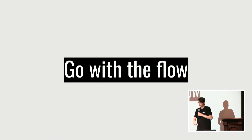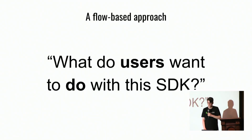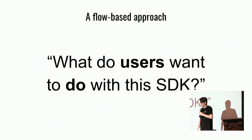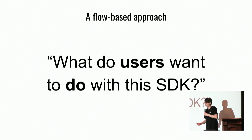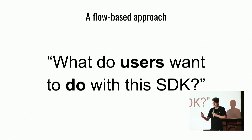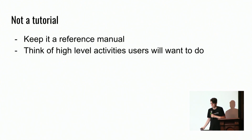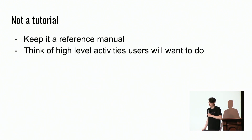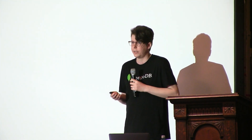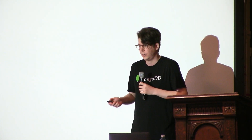So let's go with the flow. What's one approach we can take to improve the experience? A flow-based approach asks the question: what do users want to do with the SDK? And we frame our information that way. This is still a reference manual — we think at a high level about what activities users will want to do, and use that to organize the information. We're not moving away from detailing specific code entities.